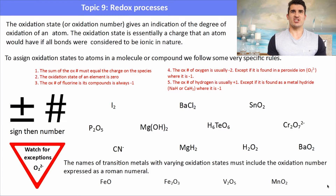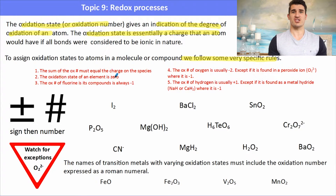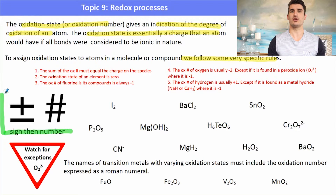The oxidation state or oxidation number gives an indication of the degree of oxidation of an atom — essentially the charge the atom would have if all bonds were considered ionic. Rules for assigning oxidation states: the sum of oxidation numbers must equal the overall charge on the species; an element has oxidation state zero; fluorine is always −1; oxygen is always −2 except in a peroxide; hydrogen is always +1 except in a metal hydride where it's −1. The IB requires you write the sign first, then the number.